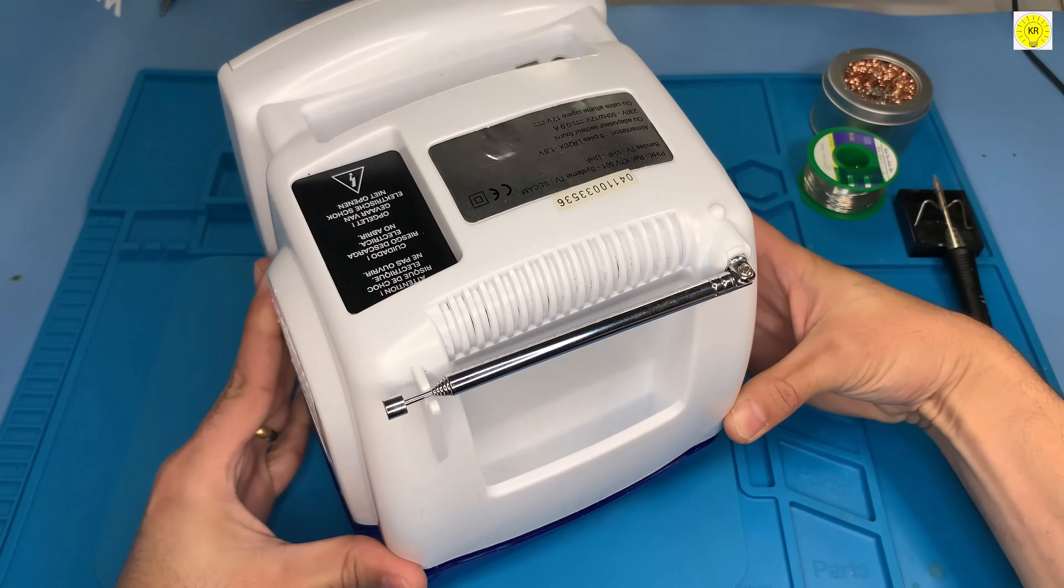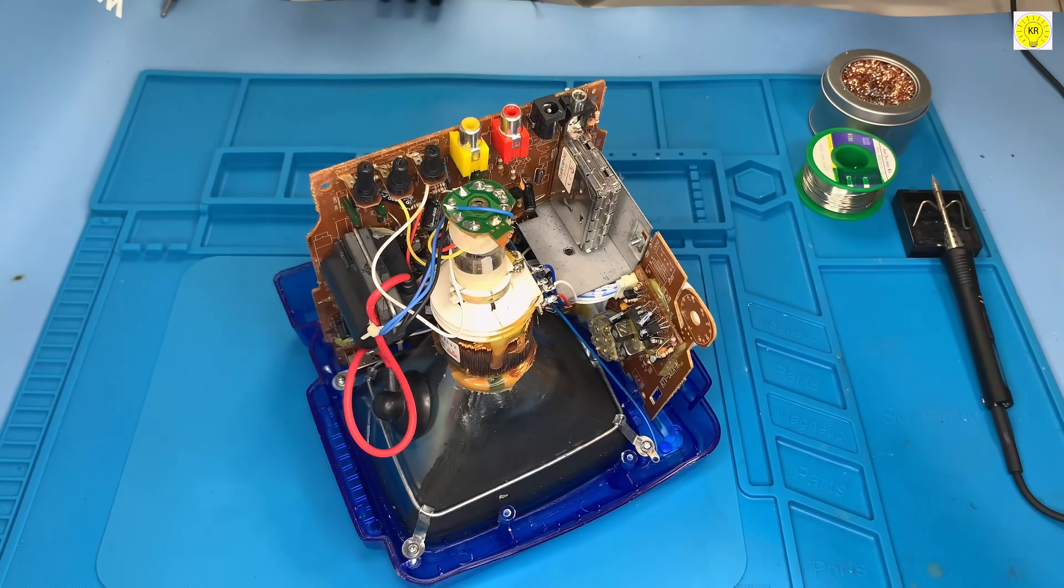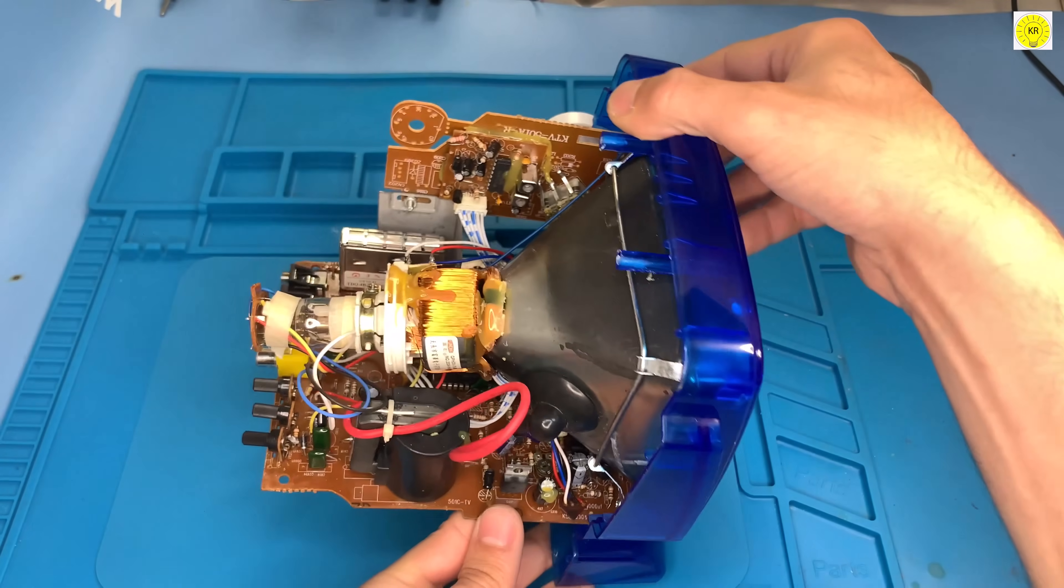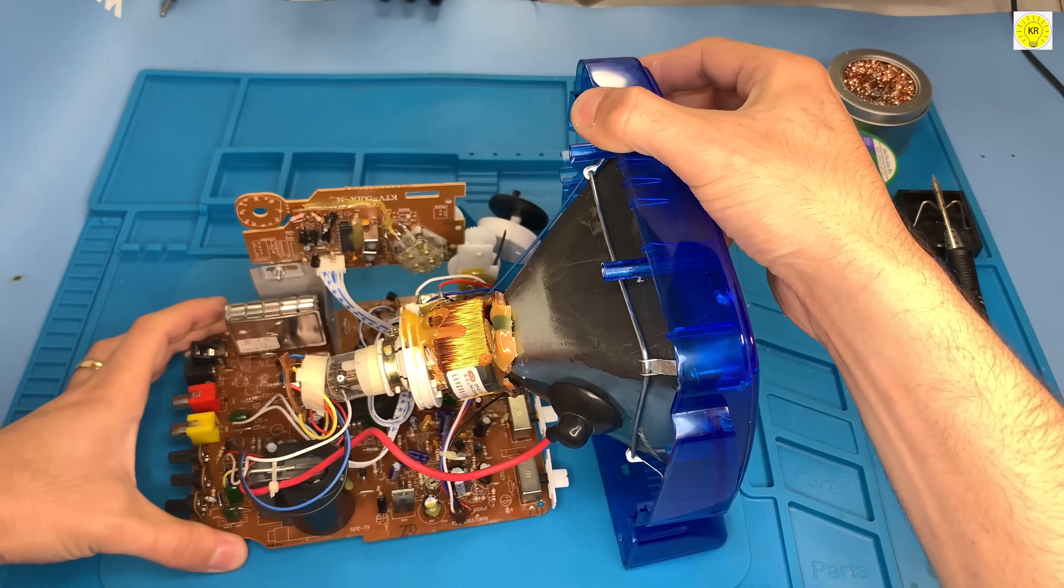Start by removing the back cover of your CRT television. After removing the cover, we can see the interesting board and electronic components.